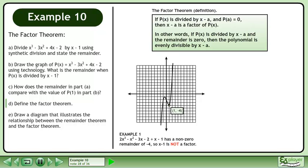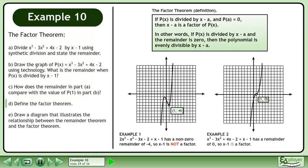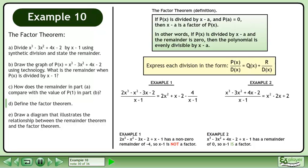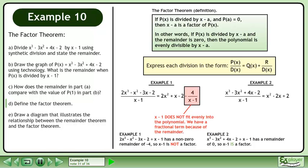For example, 2x-cubed minus x-squared minus 3x minus 2 divided by x minus 1 has a non-zero remainder of negative 4, so x minus 1 is not a factor. In our next example, x-cubed minus 3x-squared plus 4x minus 2 divided by x minus 1 has a remainder of 0, so x minus 1 is a factor. Now express each division in the form p of x over d of x equals q of x plus r over d of x. x minus 1 does not fit evenly into the polynomial — we have a fractional term because of the remainder. x minus 1 does fit evenly into the polynomial — there is no remainder or fractional term.